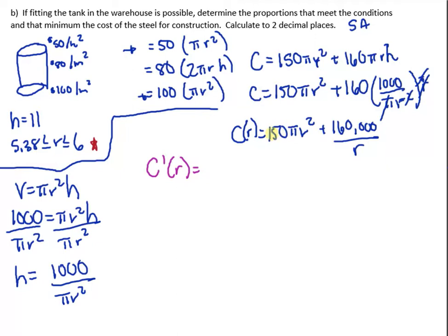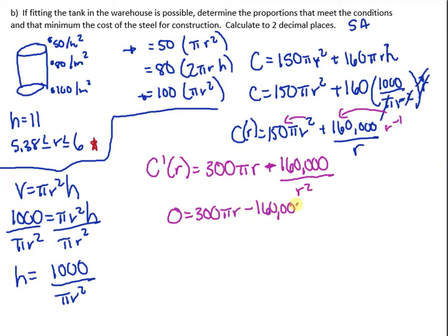So the derivative of C at r. 150 pi is just a constant, so bring that 2 down. I have 300 pi r. And then I'm going to make this 160,000 r to the negative 1, so bring down that negative 1. We'll get minus 160,000, and then we have r to the negative 2. So we can put that over r squared. When does that equal 0? So 0 equals 300 pi r minus 160,000 over r squared.